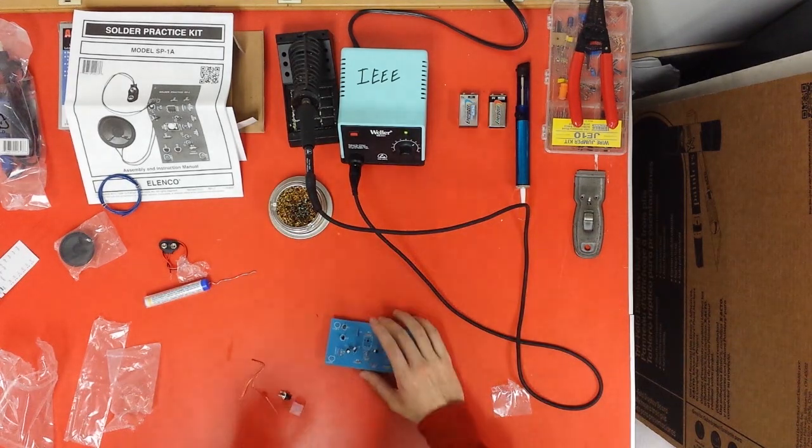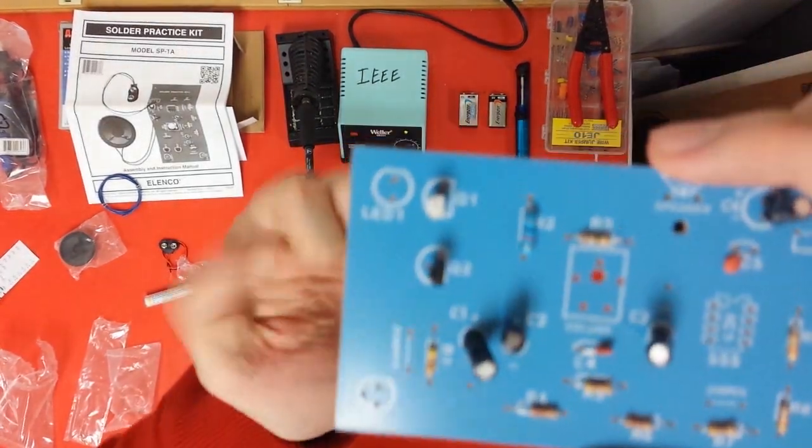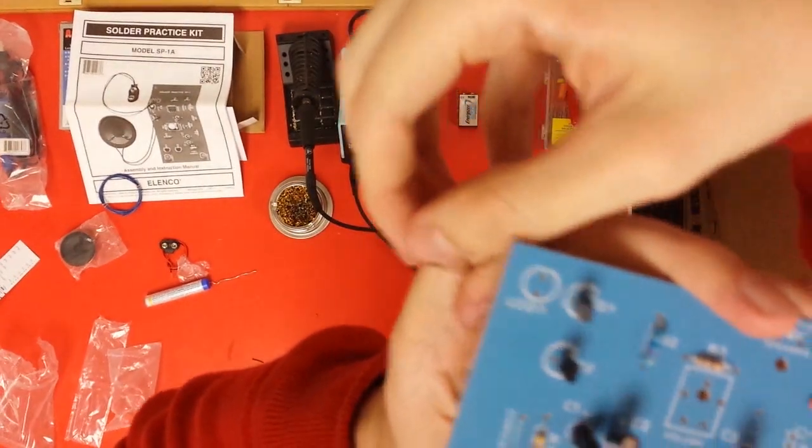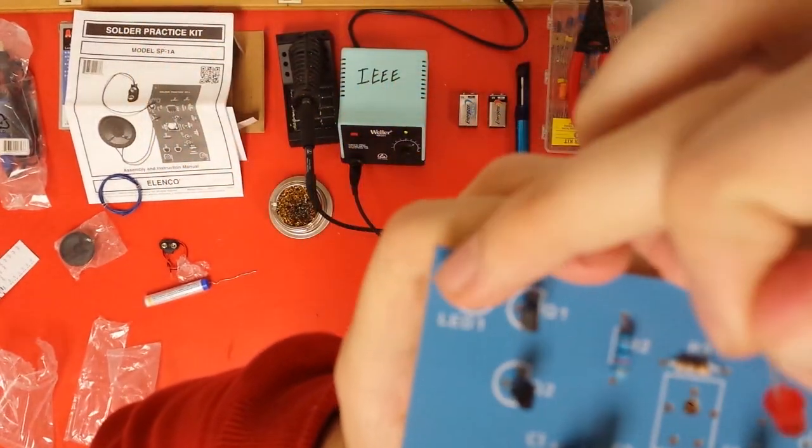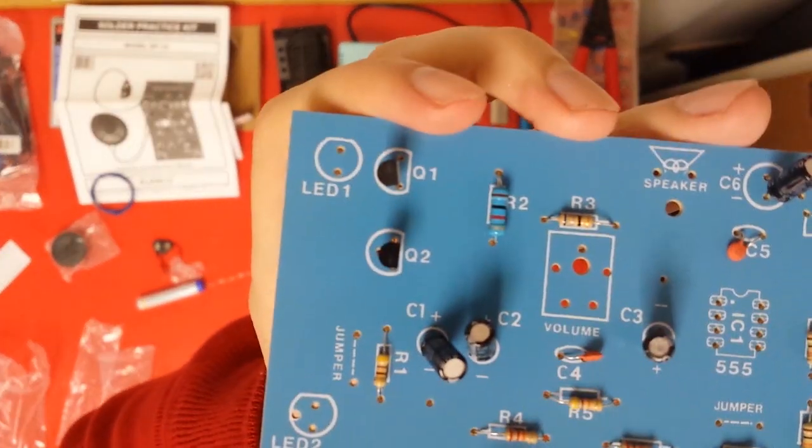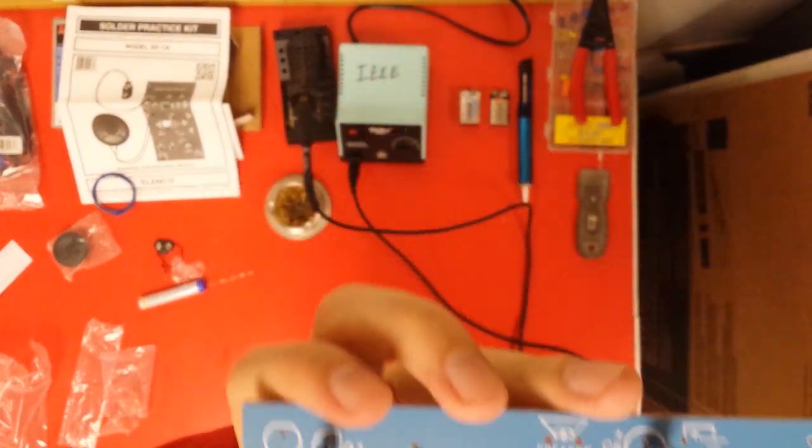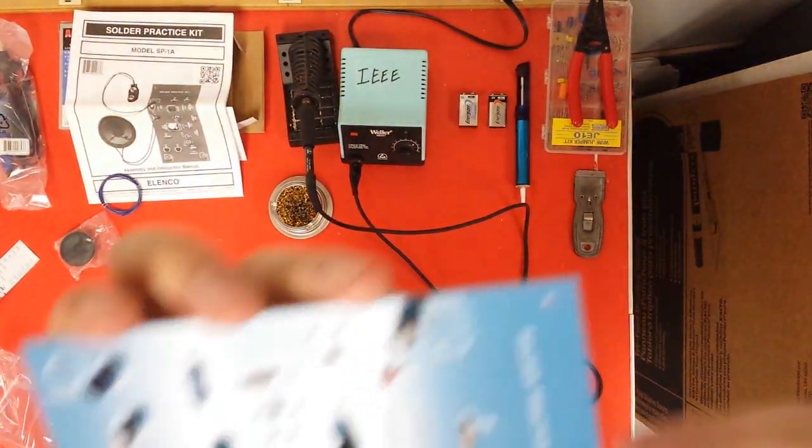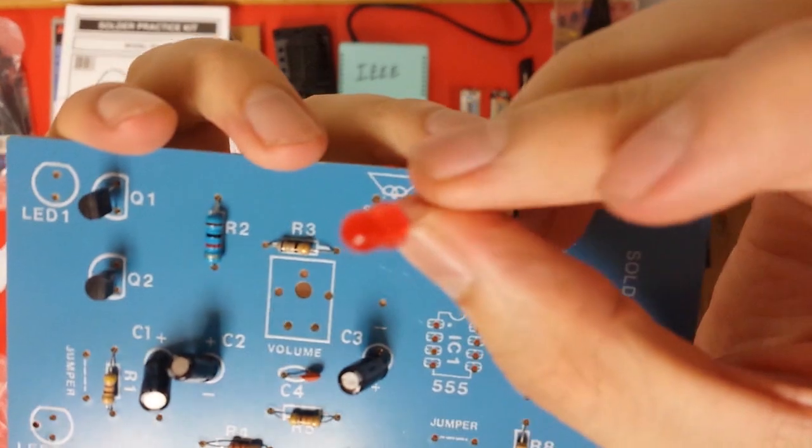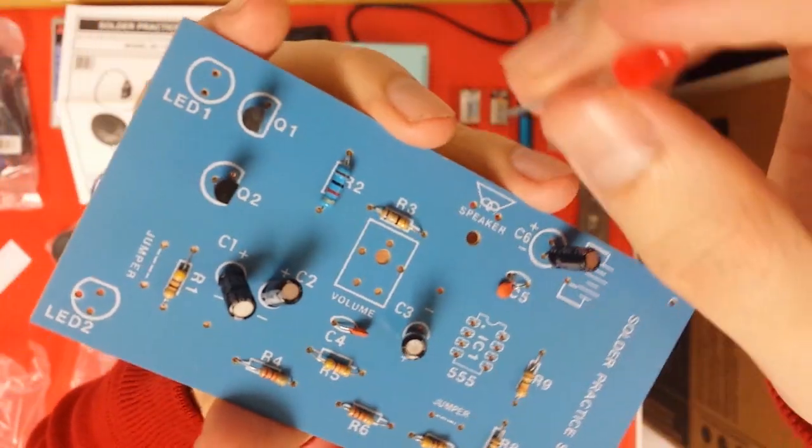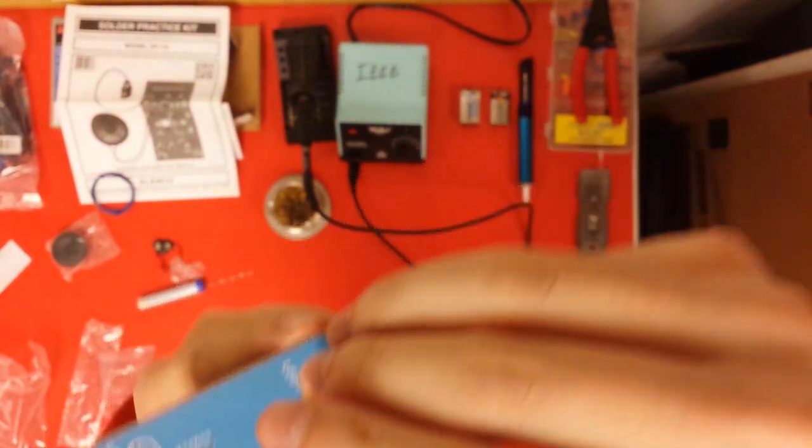Alright, now the LEDs. So if you look really closely at the pictures here, LEDs also have a similar thing where it's like a circle and then it cuts off. There's like a little edge on the circle. So when you look at your LED, it also has a pretty similar thing going on. You see there's like a little straight edge. You want to make sure that the straight edge matches the picture's straight edge.